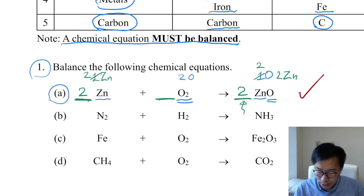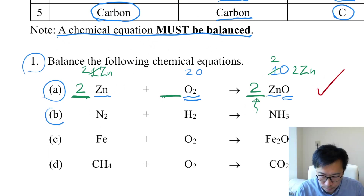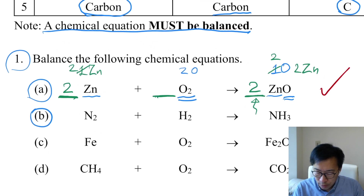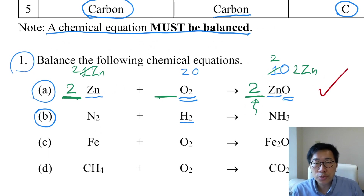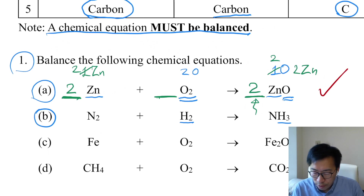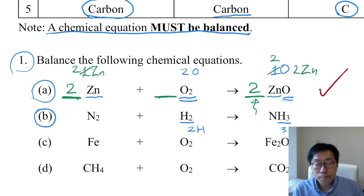Let me show you another example. Let's move on to part B. This time, we notice that on the left-hand side we have two hydrogen atoms, while on the right-hand side we have three hydrogen atoms, so the number of H atoms is not balanced yet.